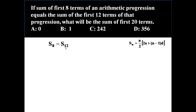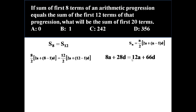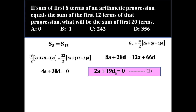Putting n = 8 gives the left-hand side and n = 12 gives the right-hand side. So S8 = (8/2)(2a + 7d) = S12 = (12/2)(2a + 11d). Simplifying gives 8a + 28d = 12a + 66d, which further simplifies to 4a + 38d = 0, and dividing by 2: 2a + 19d = 0. Call this equation number 1.